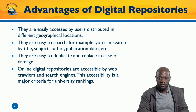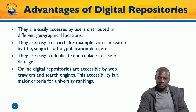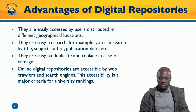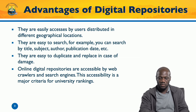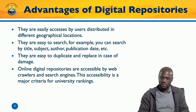Online digital repositories are accessible by web crawlers and search engines, and this accessibility is the major criteria for university rankings. We want to look at how Google indexes repositories to make this point clear.